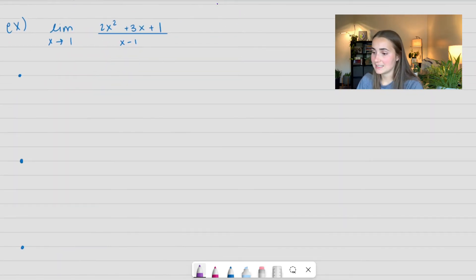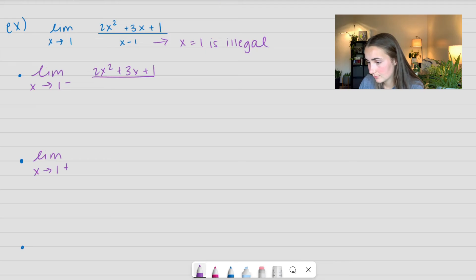So here we have the limit as x approaches 1 of 2x squared plus 3x plus 1 all over x minus 1. If we look at our denominator, we're going to tell x equals 1 is illegal. We can't plug that in or else we divide by 0, which is a big no-no. So what we need to do is take the limit as x approaches 1 from the left side, and again the limit as x approaches 1 from the right side.